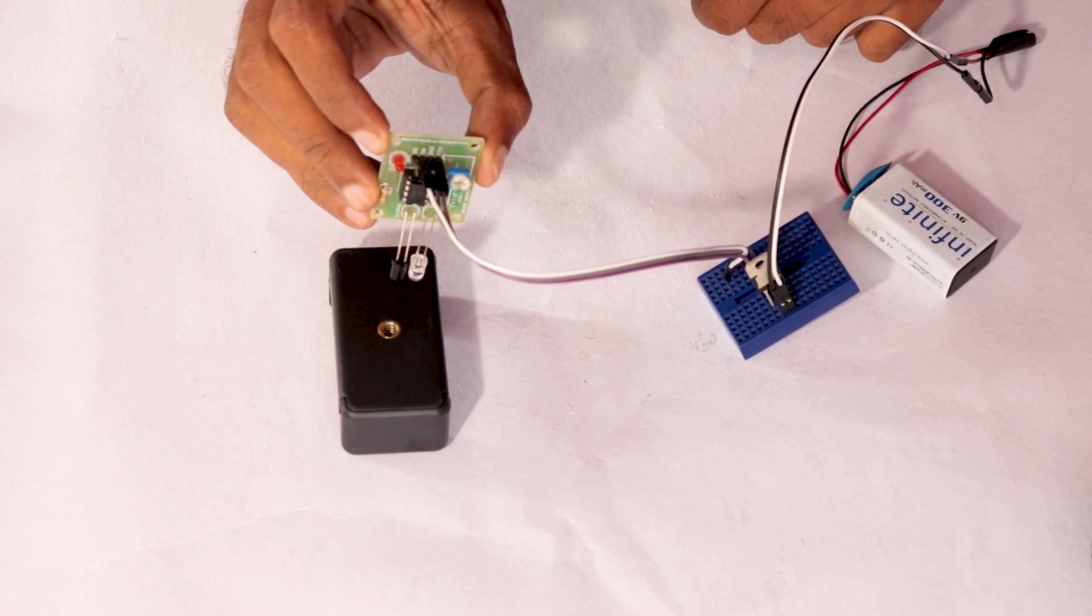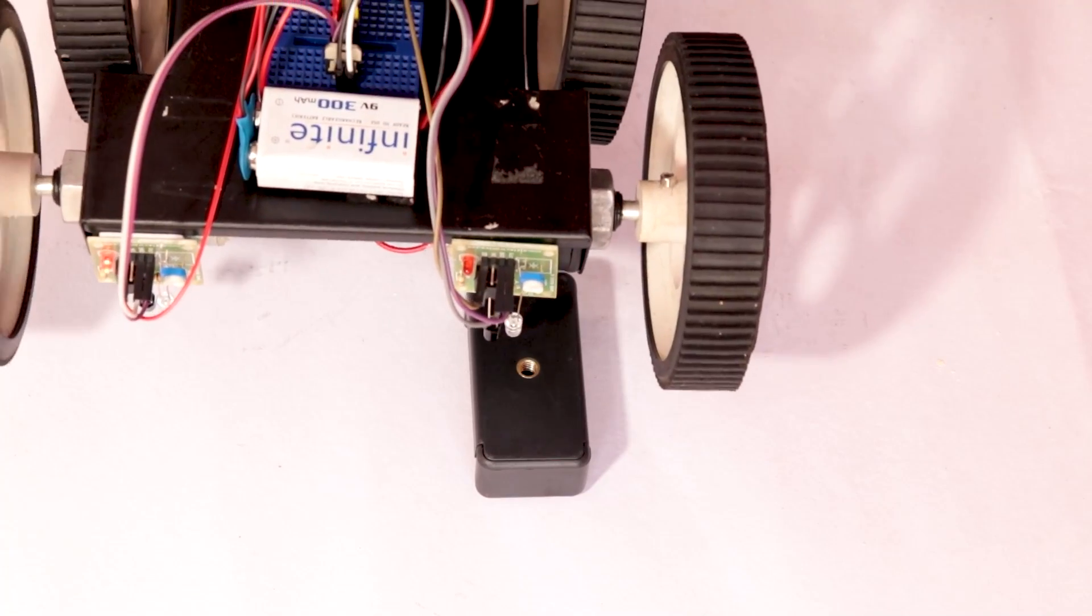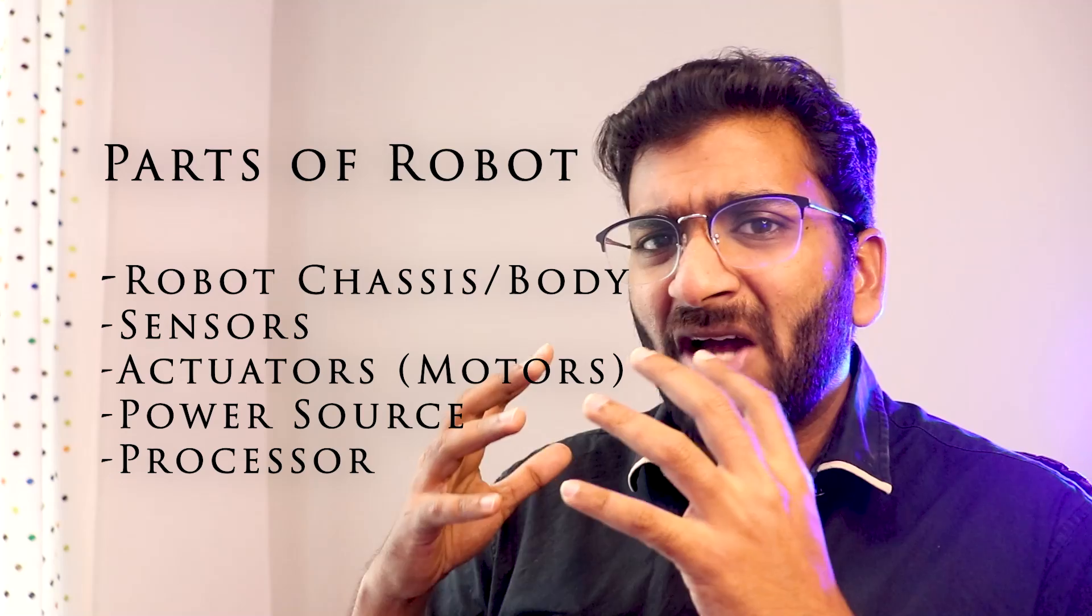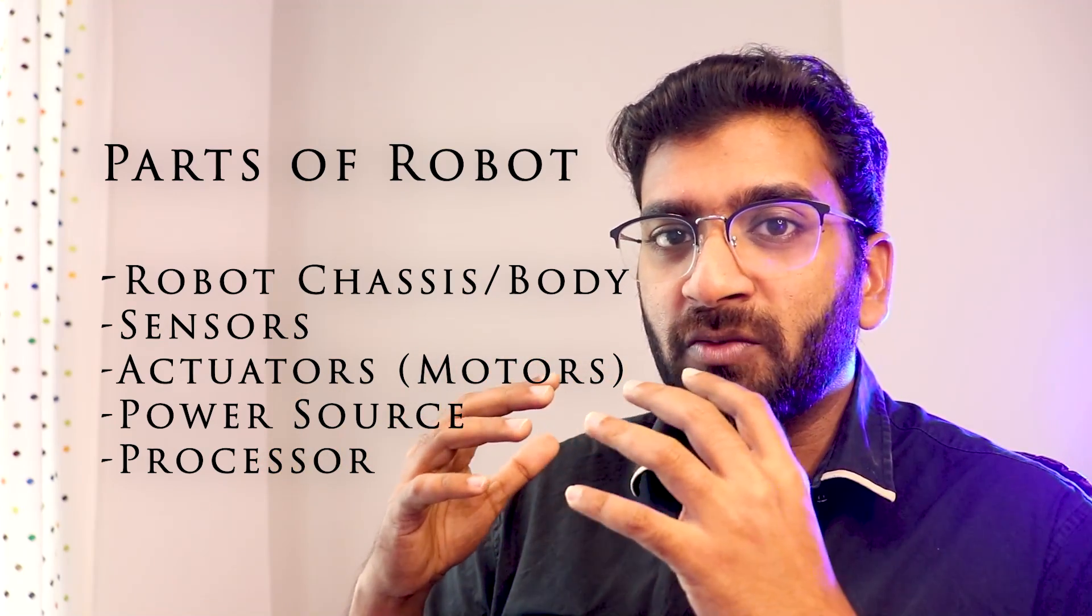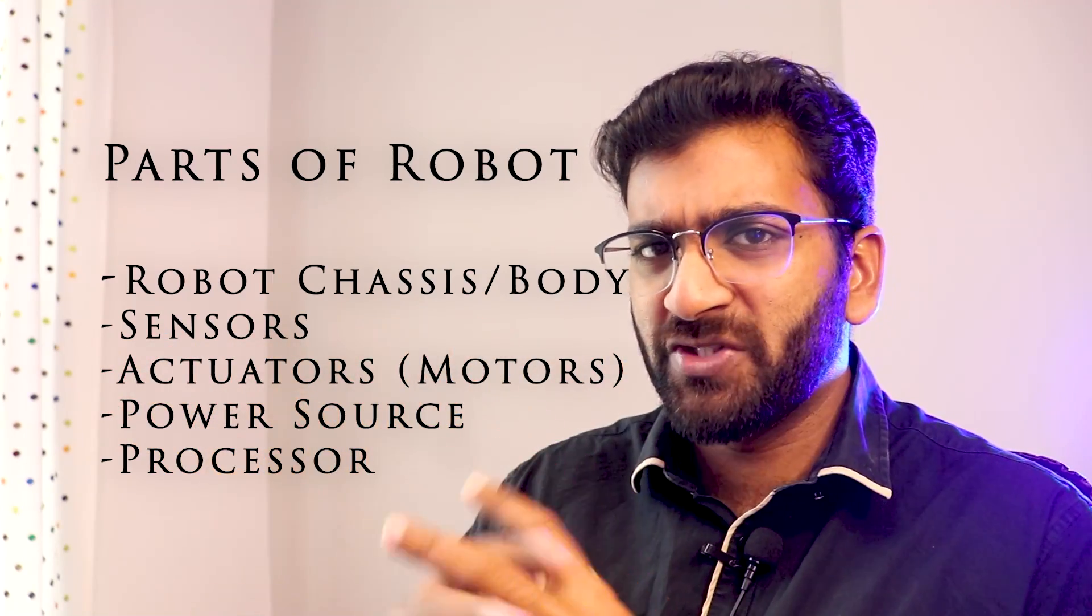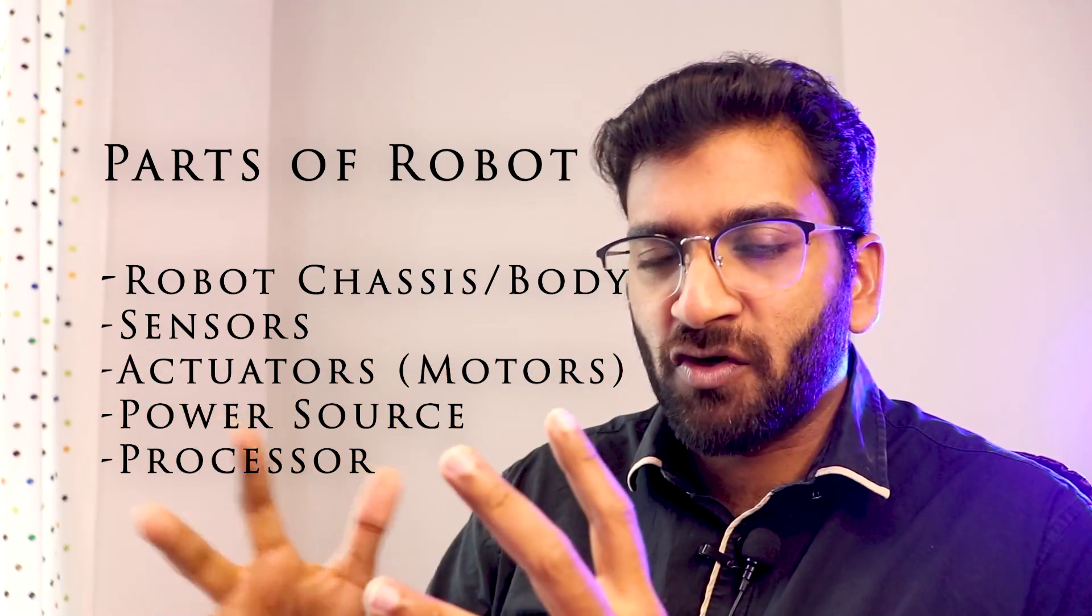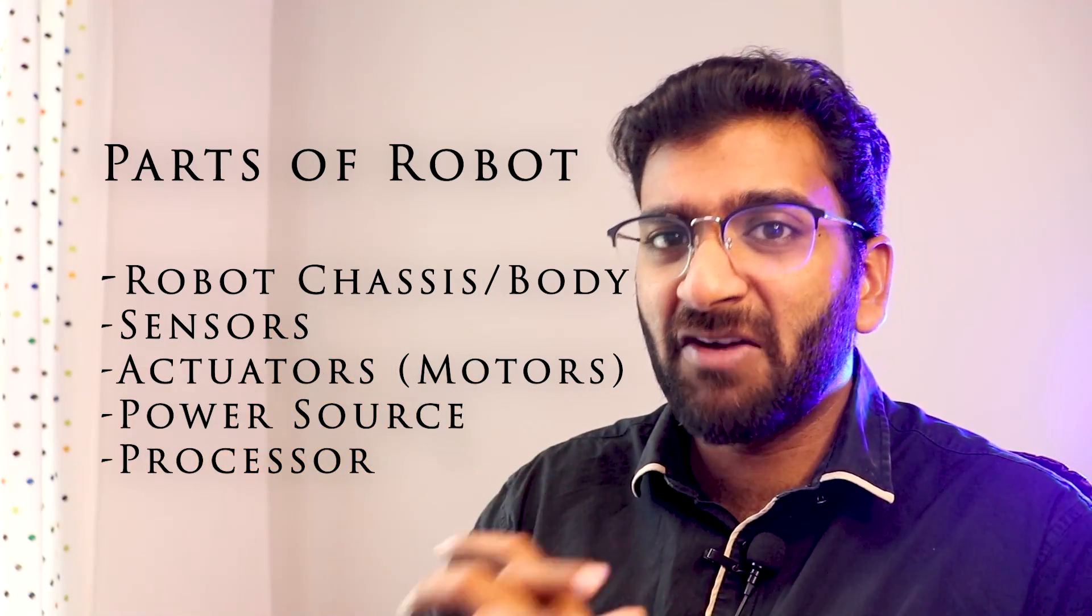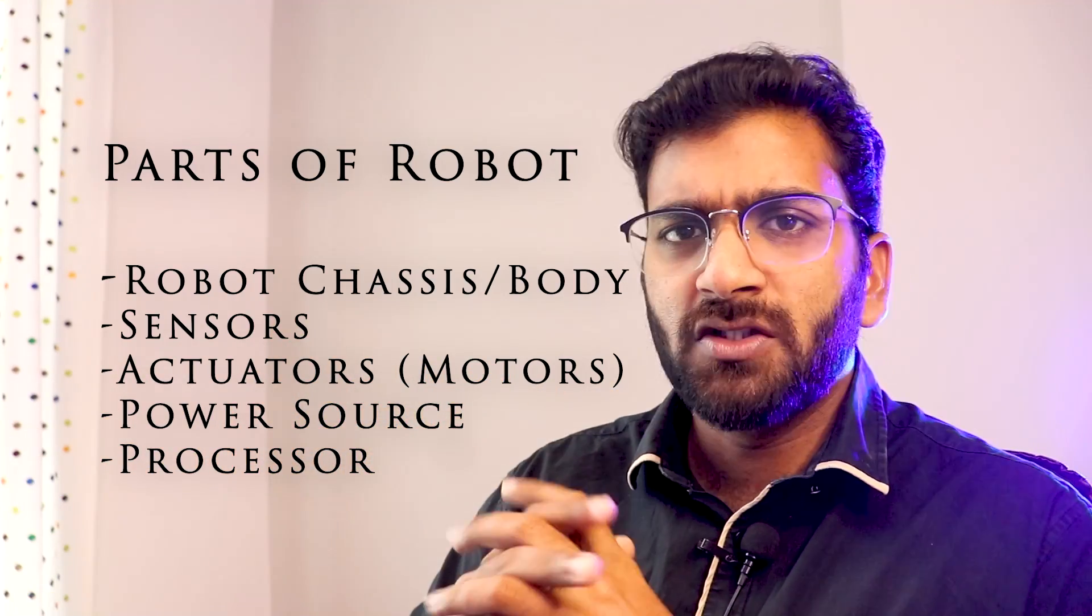Then robots have sensors. Sensors are devices that sense the outside world. They can detect things like property, events, or changes in the environment. Then robots have actuators that will help the robot move or do an output action, for example motors. Then we have a power source that will power up the entire robot - all the components, sensors, motors, microcontrollers, everything that requires power.